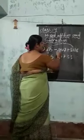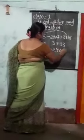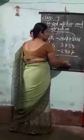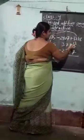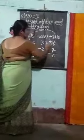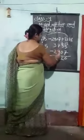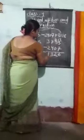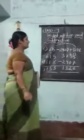Now I will subtract 2407 from 3733. Here 3 will become 13 when I ask 1 from 3, this will become 2. 13 minus 7 is 6. 2 minus 0 is 2. Now 7 minus 4 is 3, and 3 minus 2 is 1. So, the answer is 1326.